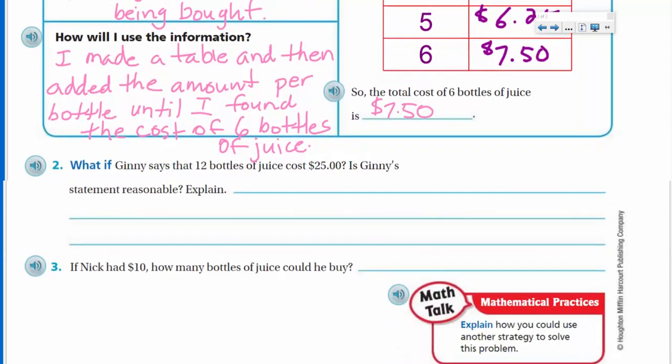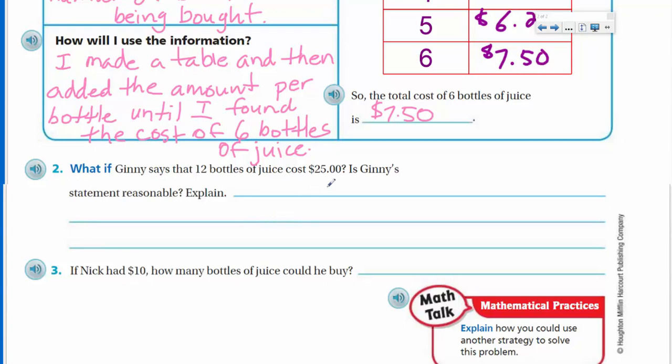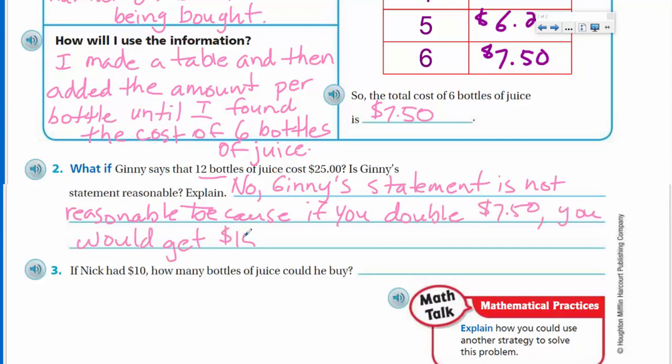Now what do we have down here? It says, what if? What if Ginny says that 12 bottles of juice cost $25? Is Ginny's statement reasonable? Explain. All right. Well, six bottles is $7.50, that's about $8. Now we're talking double that, 12 bottles. That's like 14. No. $25? That would not be reasonable at all. And I have to kind of be able to explain because it tells me to. So definitely it wouldn't be reasonable. I know that six bottles of the juice were that and I just rounded it to eight. So twice that amount, yeah, it would actually be exactly $15. But my estimate would still have made it under. So let's go ahead and write that down. There you go. So different ways you could say that, just one way that you could say that.